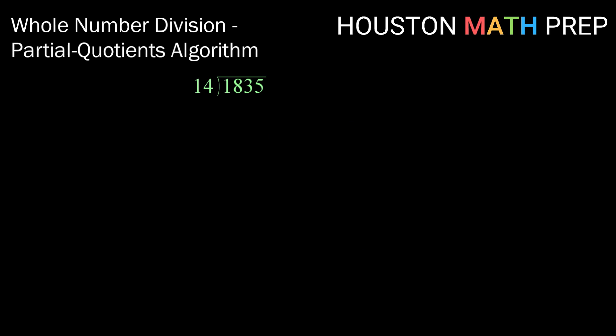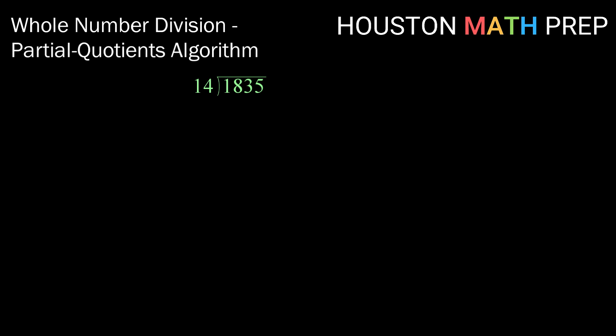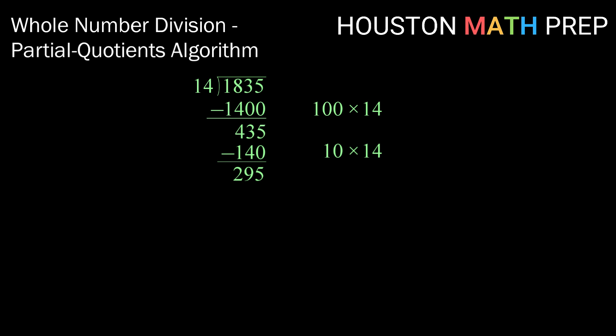All right, let's try that one more time. This time, let's divide 1835 by 14. Thinking through our multiples of 10 times 14 that we can take away, we can see here that we can subtract away 100 times 14. That leaves us with 435. Now 100 times 14 is too large. So we'll move down a multiple of 10 and subtract away 10 times 14. That leaves us with 295 where we can again subtract 10 times 14. This leaves us with 155. So one final time we can subtract 140 or 10 times 14.